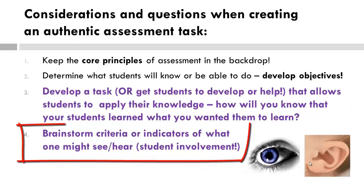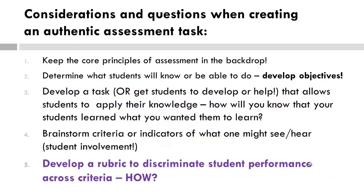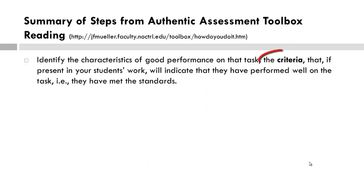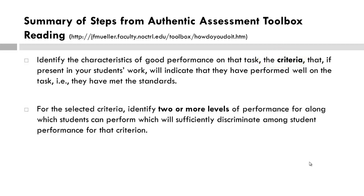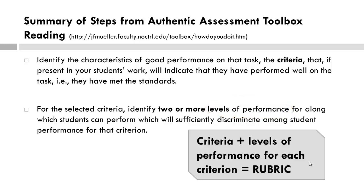Then brainstorm criteria that will demonstrate the learning. What specifically will you see or hear as evidence of student learning? Again, get the students to help you do this. Why and how does this facilitate their learning? This brainstormed list of criteria is critical, and that is the starting point of creating a rubric. Once you have identified the criteria of what you would see or hear to demonstrate student learning, you have to determine the continuum of learning to demonstrate the various levels of achievement of a particular criterion.